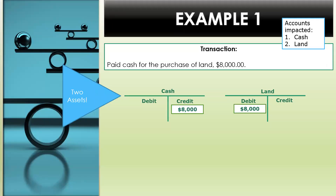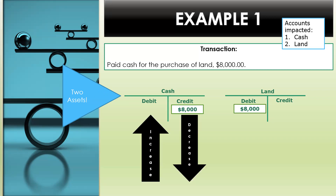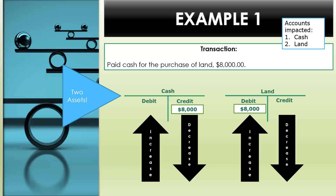Using what we have learned, let's work some additional business transactions. Please know that these are new business transactions and they are different from the prior debits and credits videos. Example one — business transaction: paid cash for the purchase of land in the amount of $8,000. The accounts impacted are cash and land — these are two asset accounts. We will credit cash in the amount of $8,000; this credit will decrease the cash account. We will debit land for $8,000; this debit will increase the land account because this is an asset and debits increase assets.